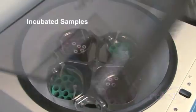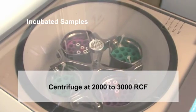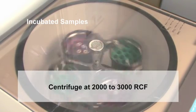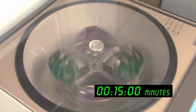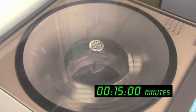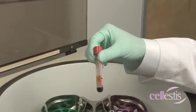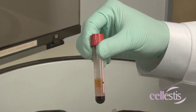Plasma separation involves centrifuging the tubes at 2,000 to 3,000 RCF for 15 minutes. The gel plug will separate the plasma from the cells, enabling easy removal of plasma.